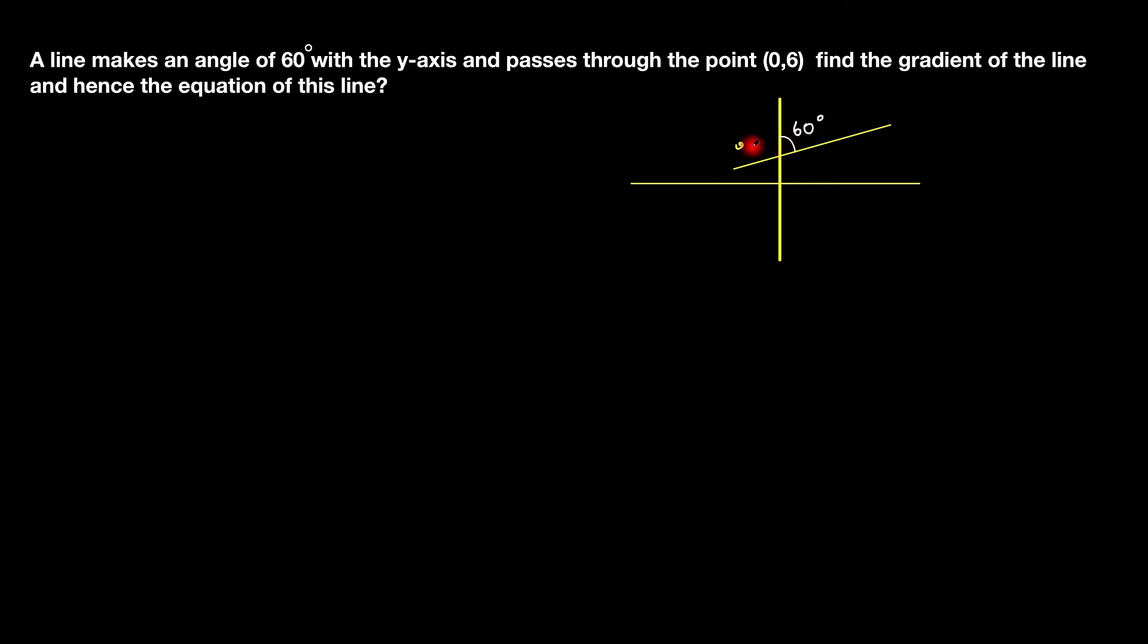So this is the coordinate (0,6) where it passes and this is the angle that it makes with the y-axis. Now in order to do this question, we'll be using the fact that m is equal to tan θ, but we're not going to use the 60 degrees because it's the angle that this makes with the x-axis. The one that we're interested in would be 90 minus 60, which is 30 degrees.